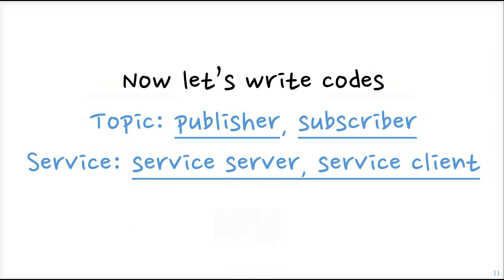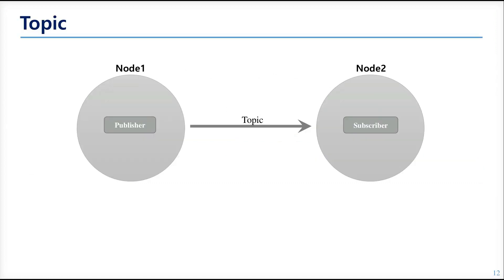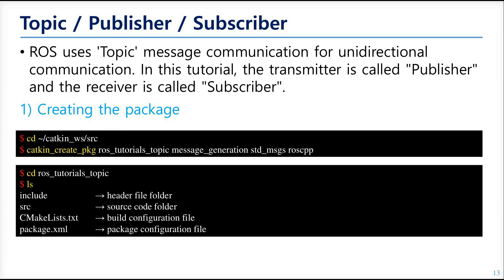Now let's write the codes. We'll make nodes for topic communication and nodes for service communication. Before testing node communication or making node sources, we should make the package. ROS packages are usable when located in the source folder of the ROS workspace. The catkin workspace is a temporary name — you can set the folder as a workspace using the catkin_init_workspace command. The catkin_ws is the workspace we are going to use, so let's make the ROS package here. The words following after the catkin_create_pkg command are the package name and the names of dependent packages.